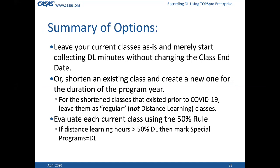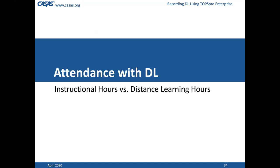To summarize: it's important to leave the current classes as-is if all you're going to do is change the delivery method. If you choose to shorten the class, make the adjustments shown on this slide. All classes need to be evaluated using the 50% rule — whether 50% of attendance hours for that class will be distance learning or not. On to the attendance section — this is the part I like best, because we're talking about instructional hours and distance learning hours.